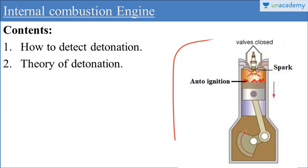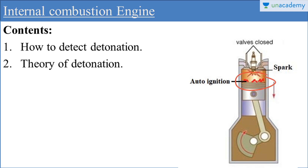This diagram represents the working of a spark ignition engine during abnormal combustion. You can see auto ignition here. The main cause of auto ignition is self ignition temperature. When the temperature of the charge crosses the self ignition temperature limit, abnormal combustion takes place inside the combustion chamber — that is called auto ignition. This auto ignition is the main cause of detonation.